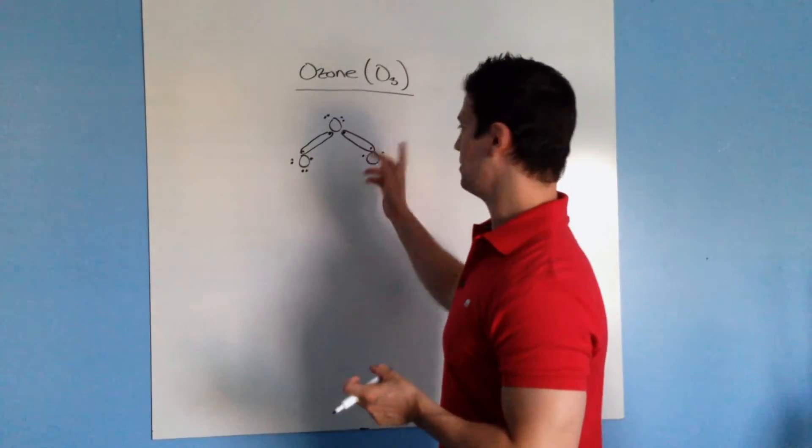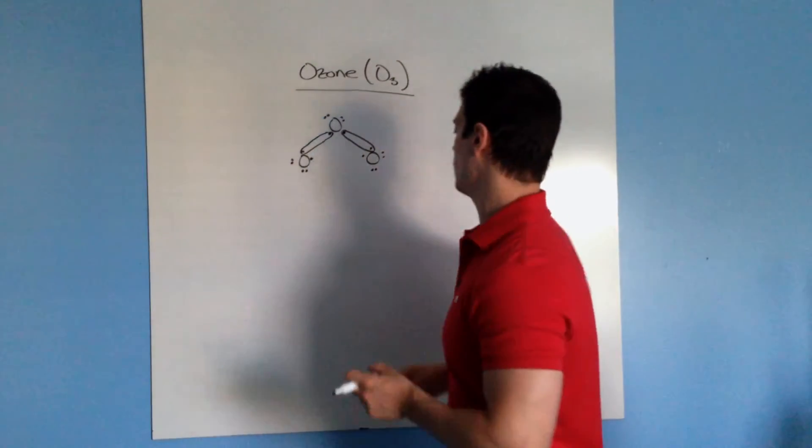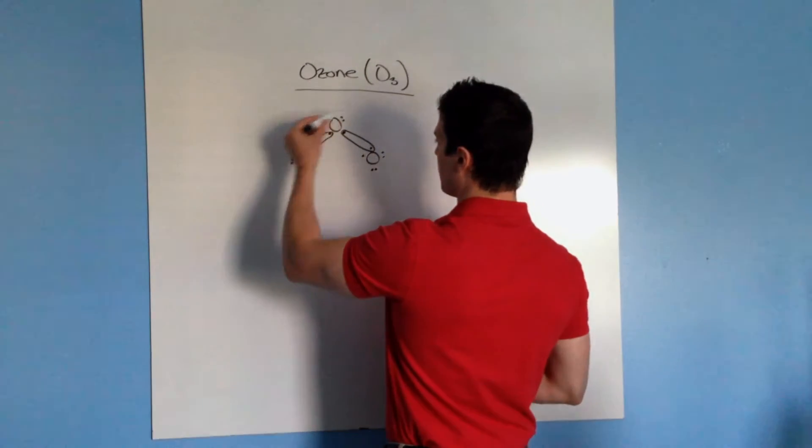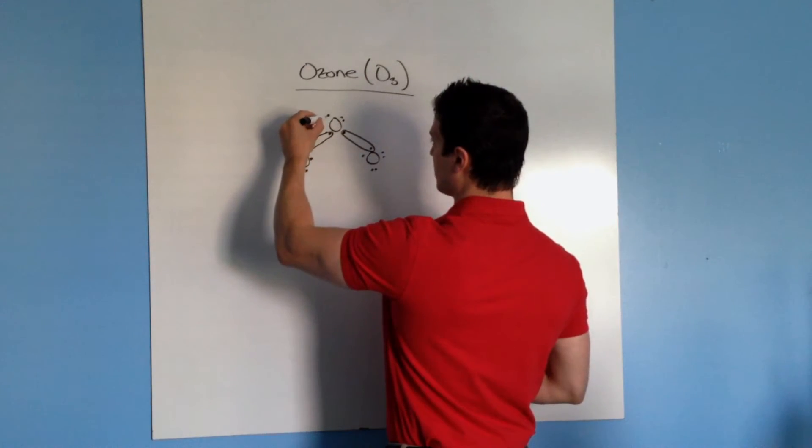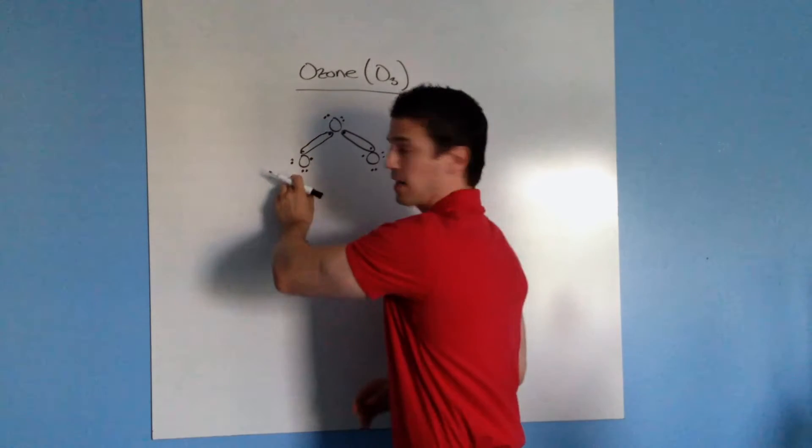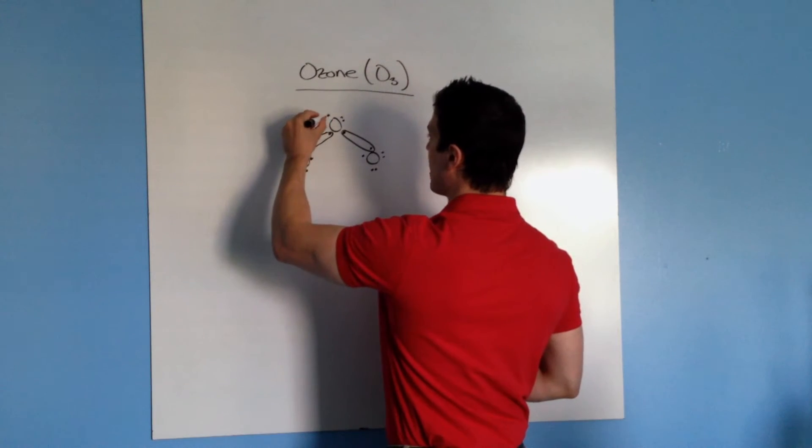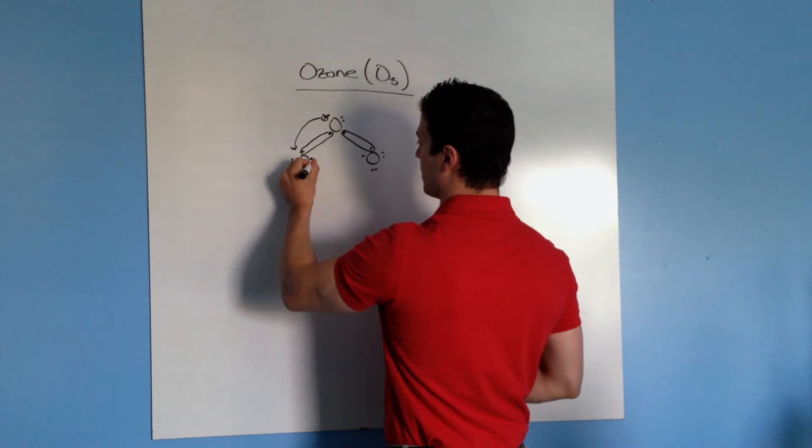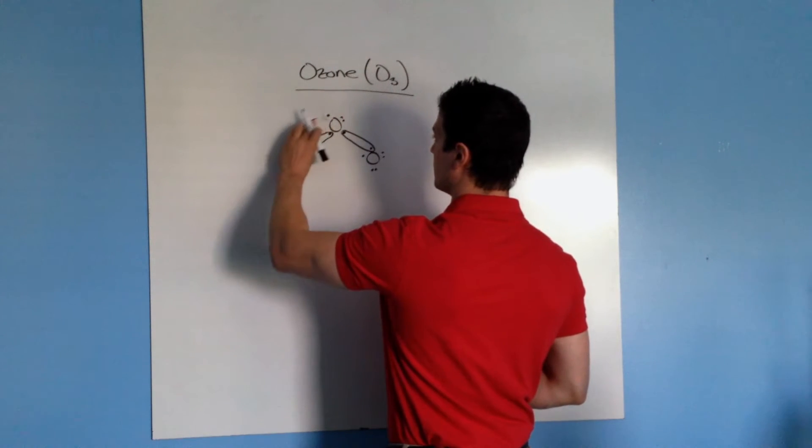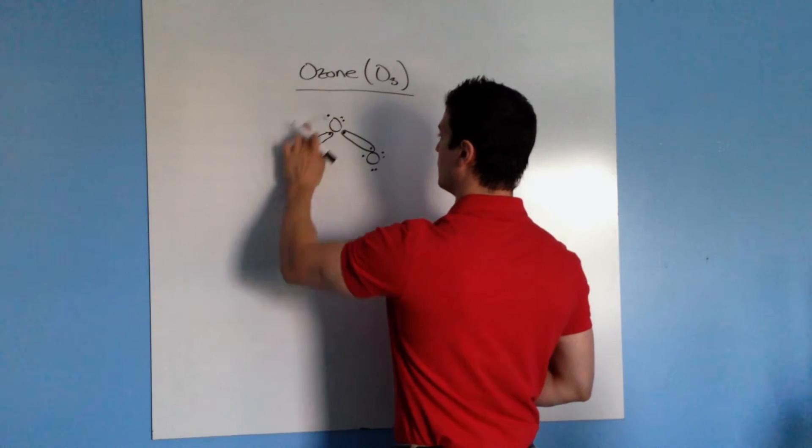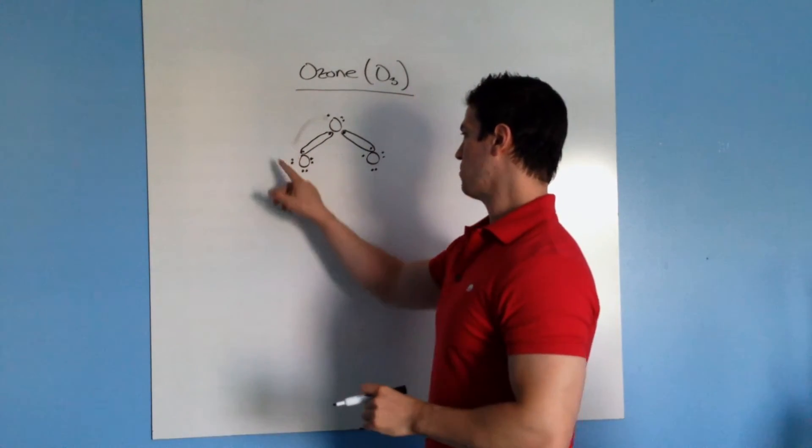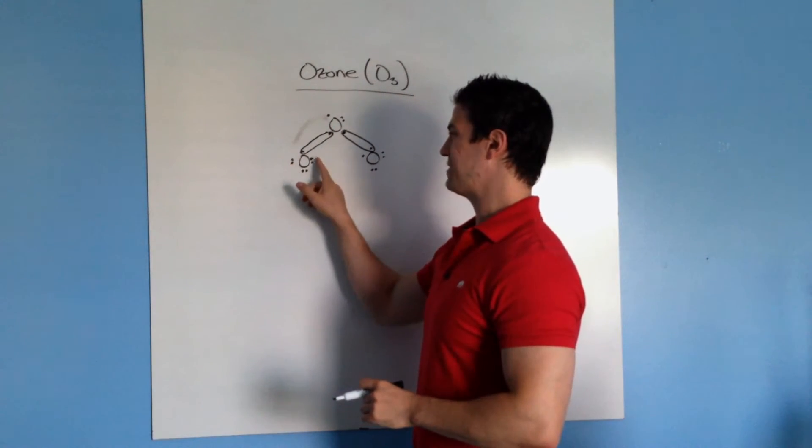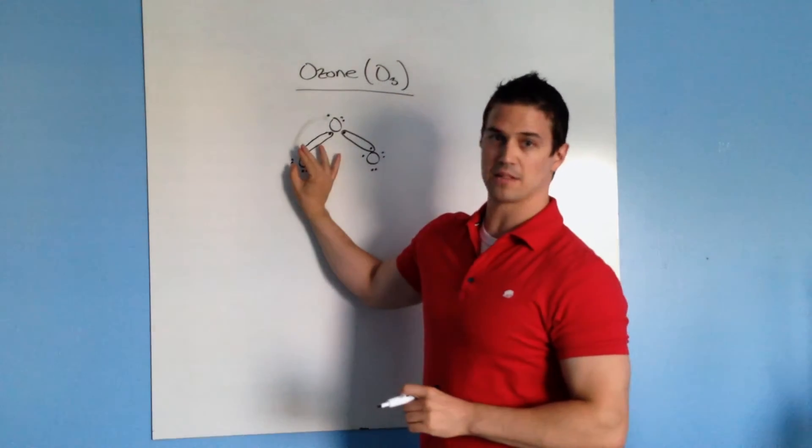So what's going to end up happening is, it doesn't matter which one you pick, I'm just going to pick this one—one of these electrons is going to be attracted. This is more electronegative than this, so it's more attracted to this one over here. So I'm going to erase it here and put it here. So now this one, if you count one, two, three, four, five, six, seven, eight, this one fulfills the octet rule.